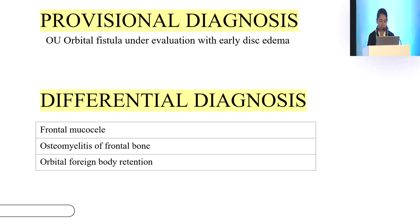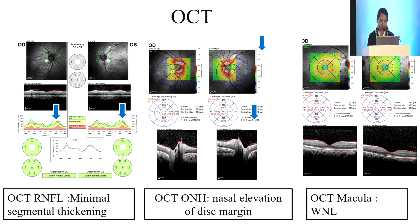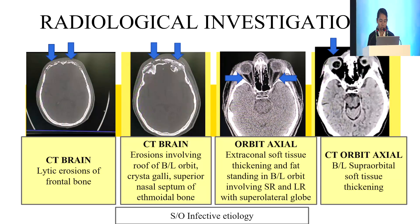Based on the history and examination, a provisional diagnosis of orbital fistula under evaluation was made with the following differential diagnoses. Pus culture sensitivity showed methicillin-resistant coagulase negative staphylococci, sensitive to vancomycin, doxycycline and tetracycline. OCT showed minimal segmental thickening and nasal elevation of the disc margin. CT brain showed lytic erosions of the frontal bone involving both orbits, and extraconal soft tissue thickening was also noted as shown in the pictures.